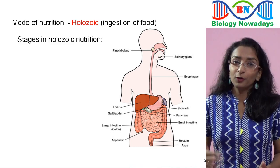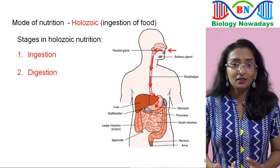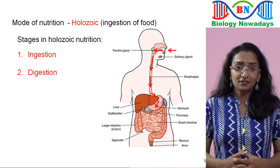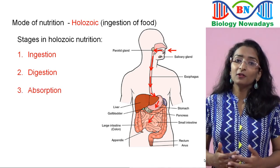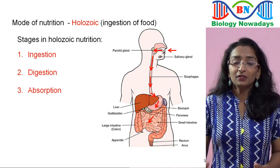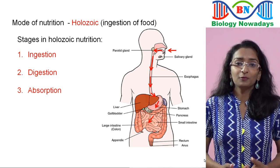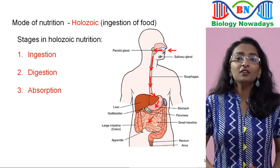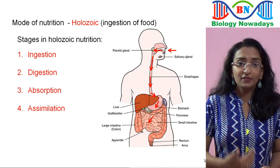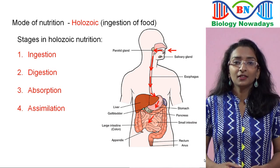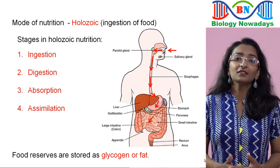There are several stages of holozoic nutrition. First, ingestion, which means taking in food through the mouth. Then digestion, which involves breaking down of complex food particles into simple molecules — digestion takes place mainly in the stomach. Then absorption, which involves taking in food in soluble form from the region of digestion into the tissues or into the bloodstream, which transports it to the different tissues — majority of absorption takes place in the small intestine. Then assimilation, which involves utilization of the absorbed molecules for various metabolic processes; food reserves are stored as glycogen or fat. And finally, egestion, which is the expulsion of undigested food material.